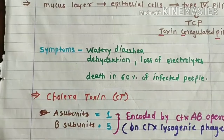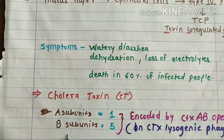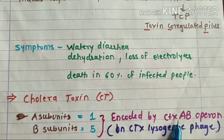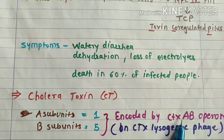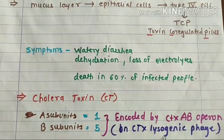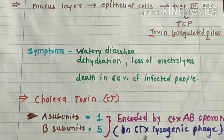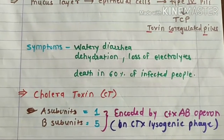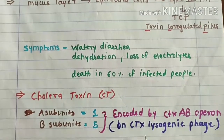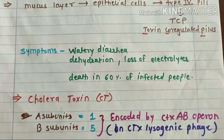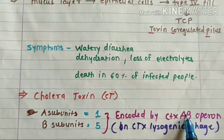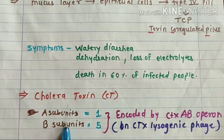The name of the toxin is cholera toxin. It is basically a protein consisting of 6 subunits — 1 A subunit and 5 B subunits. It is encoded by the CTX-AB operon. This operon is found not in Vibrio cholerae itself, but on a lysogenic phage. The name of the phage is CTX lysogenic phage, which means if a cell of Vibrio cholerae is not infected with this CTX lysogenic phage, it cannot cause cholera. Only if that strain has the CTX lysogenic phage will it cause cholera, because this phage contains the CTX-AB operon in its genome, responsible for production of cholera toxin subunits.